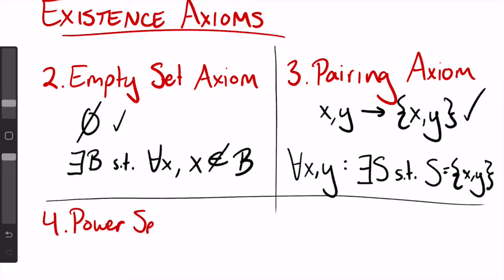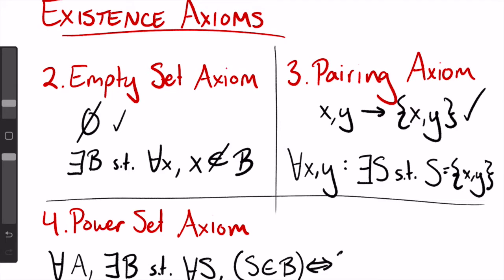Next, we have the power set axiom, which states that the power set exists. You can click on the card above for a refresher on the power set from video one. In formal terms, we would say, for every set a, there exists some set b, such that for every set s, s is in b if and only if s is a subset of a. All the members of b, all the sets inside of b, are subsets of the set a.